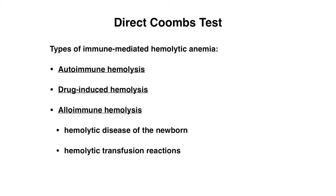The types of diseases involved are some form of immune-mediated hemolytic anemia. This can involve autoimmune hemolysis, which is when our own antibodies attack self-antigens — including warm and cold hemolytic diseases. There's also drug-induced hemolysis, which can occur as a result of a variety of different medications. And then there's alloimmune hemolysis, which involves hemolytic disease of the newborn as well as hemolytic transfusion reactions, which are reactions that occur after receiving a blood transfusion.